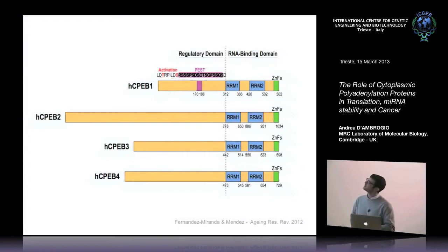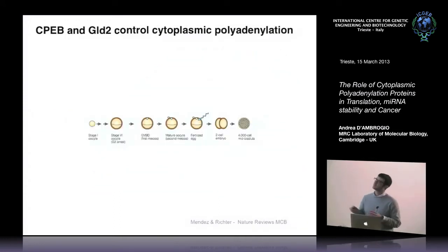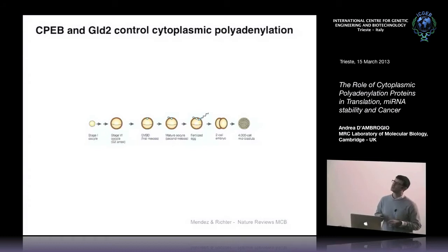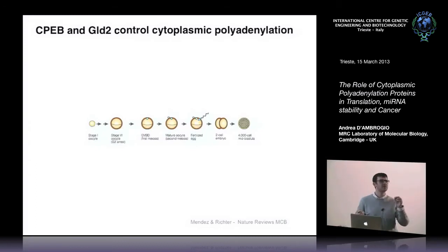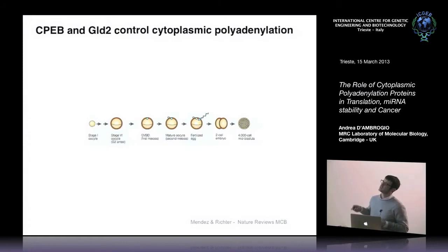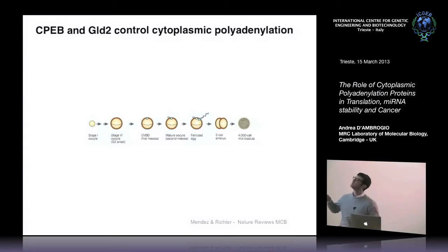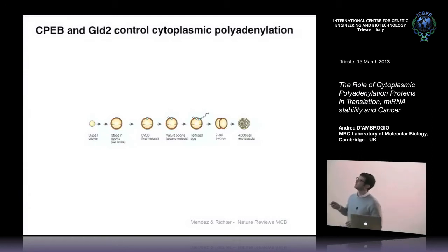Everything I said so far was discovered and characterized in Xenopus oocytes — frog oocytes. This is the maturation of frog oocytes that happens in the female frog gonads. They go from stage 1, a very small ball about one millimeter in diameter, and grow to stage 6. There's a G2 arrest, then a further maturation step called germinal vesicle breakdown in first meiosis, and then the mature oocyte can be fertilized by a sperm cell, going on with the development of the embryo.